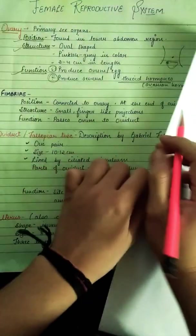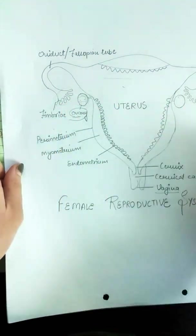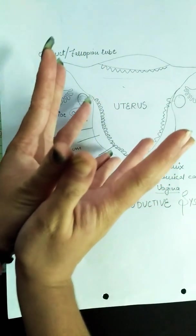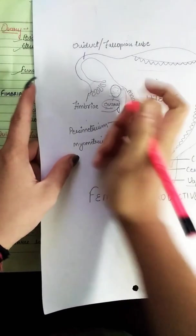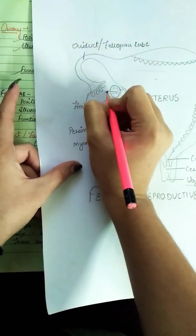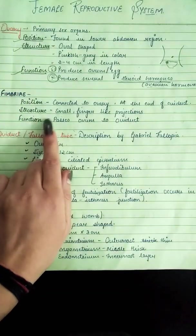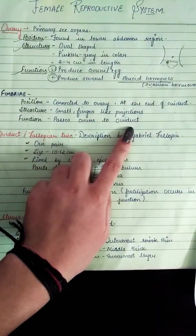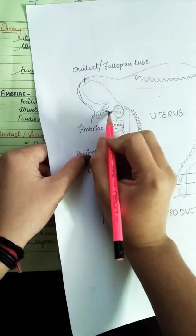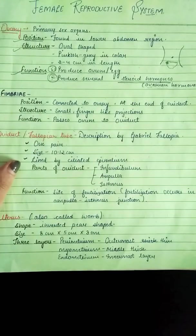The fimbriae are finger-like projections present at the end of the oviduct. Their function is to receive the ovum from the ovary and pass it into the oviduct.